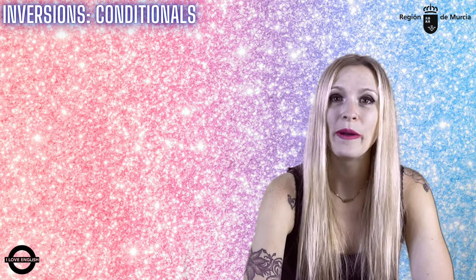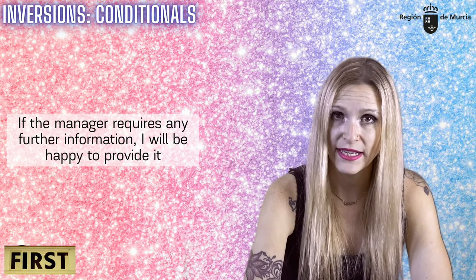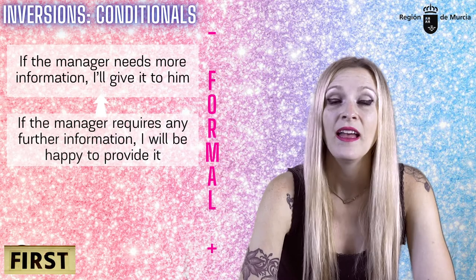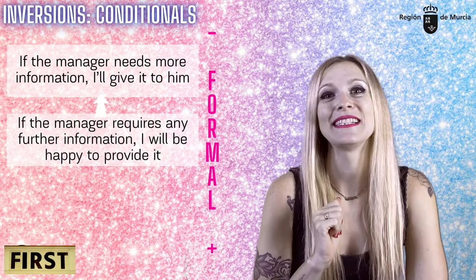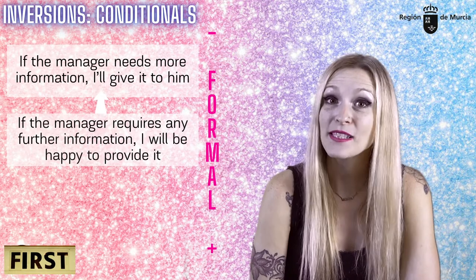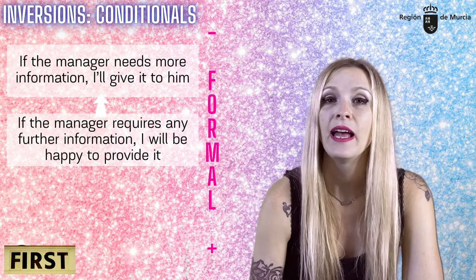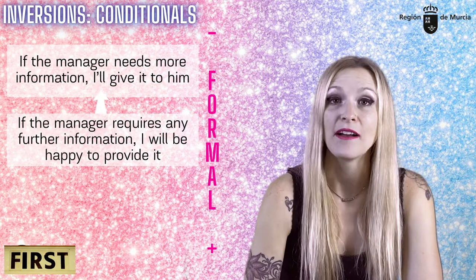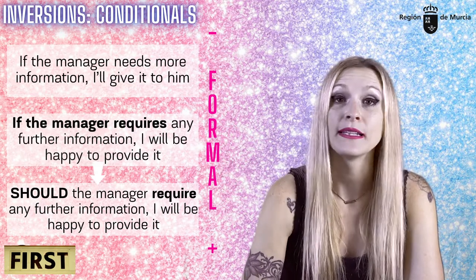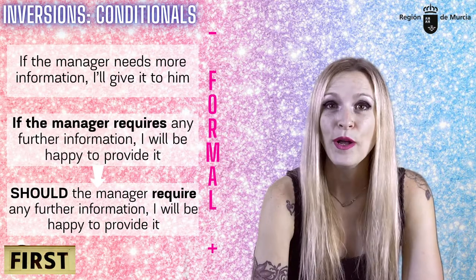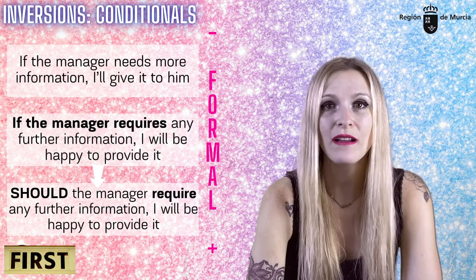Let's kick off with the first conditional by looking at this example: 'If the manager requires any further information, I will be happy to provide it.' This is a more formal way of saying 'if the manager needs more information, I'll give it to him,' but we can make it even more formal by means of inversion. To use inversion with the first conditional, we forget 'if' and start with 'should,' followed by the subject and the bare infinitive of the verb — no third person singular '-s' ending. So our inverted sentence becomes: 'Should the manager require any further information, I'll be happy to provide it.'